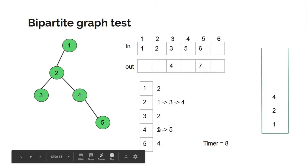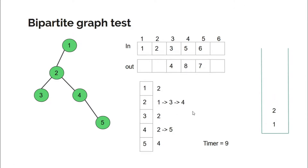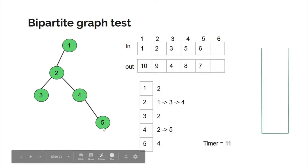Now we are back at node 4; its work is complete, so out[4] = 8, increment to 9, return to node 2. Node 2's work is complete: out[2] = 9, increment to 10, return to node 1. Node 1's adjacency list is fully processed: out[1] = 10. So to summarize: you entered node 1 at time 1, reached node 2 at time 2, node 3 at time 3 (left at 4), node 4 at time 5, node 5 at time 6 (left at 7), and so on.